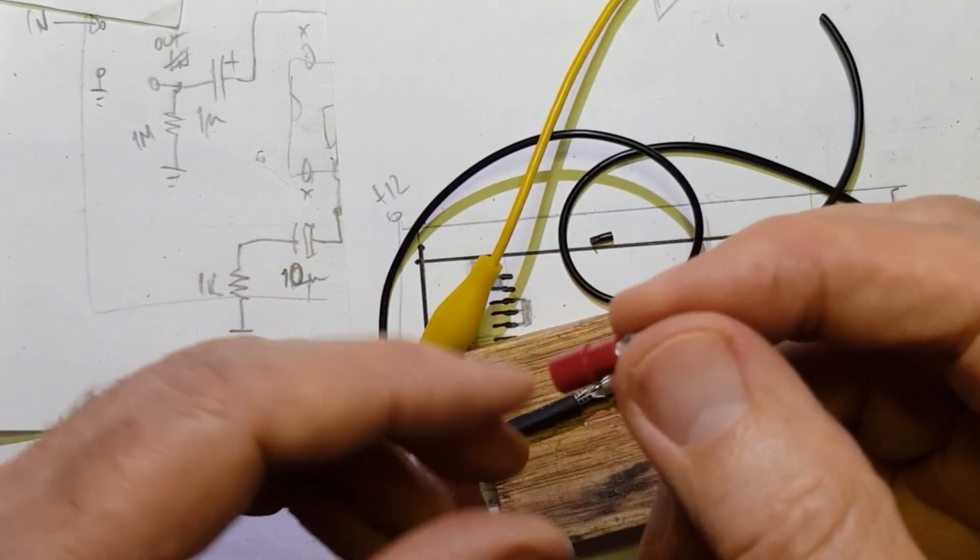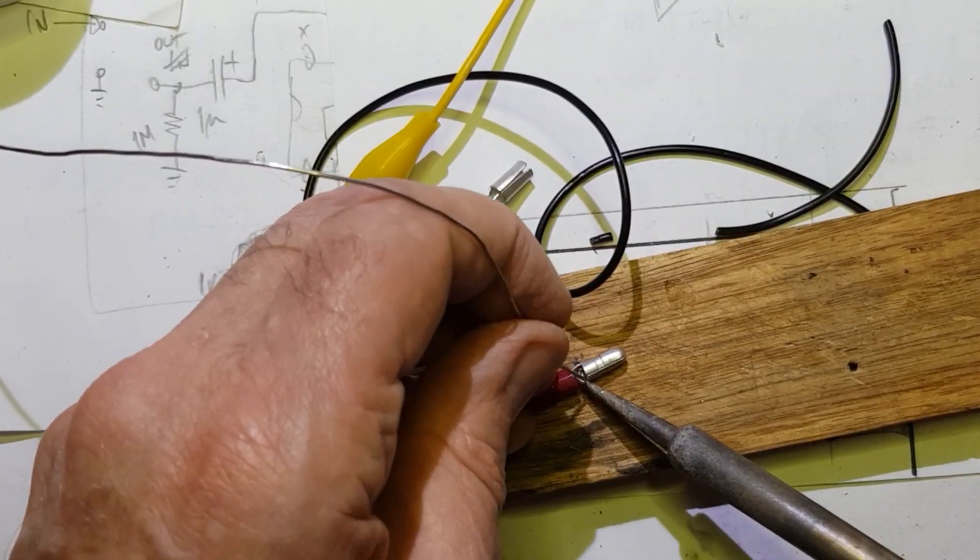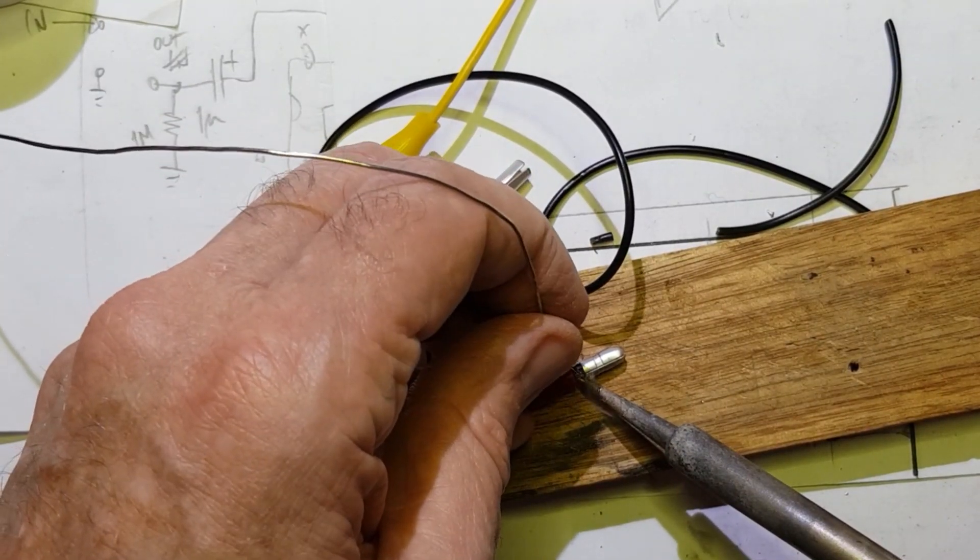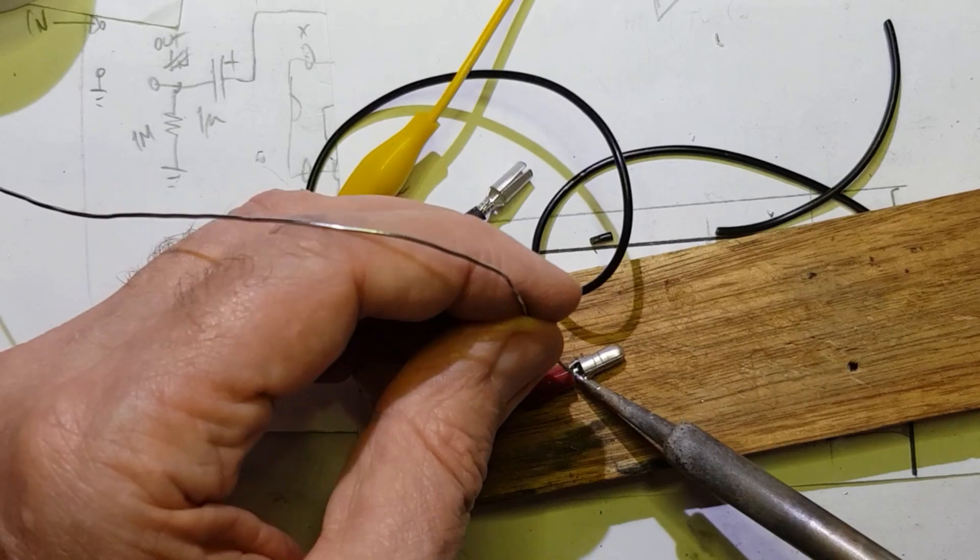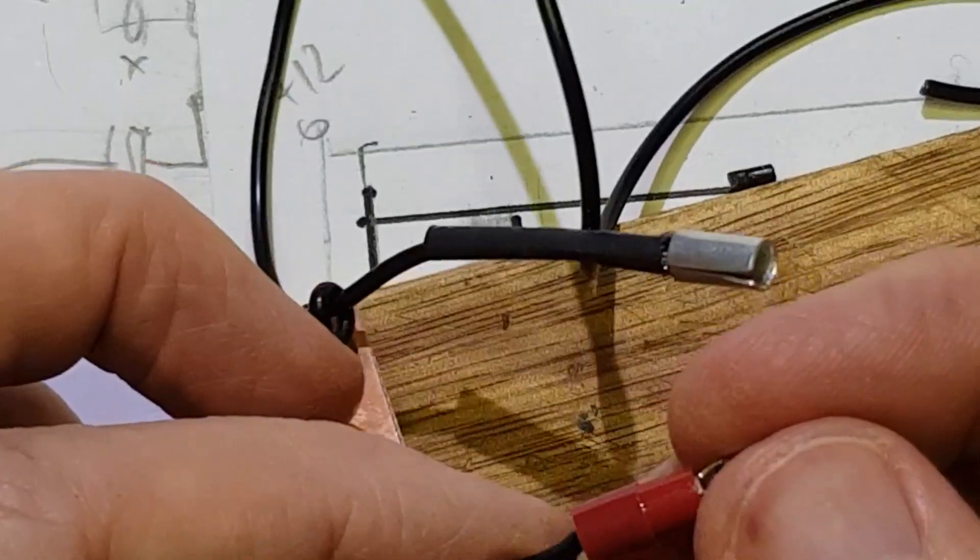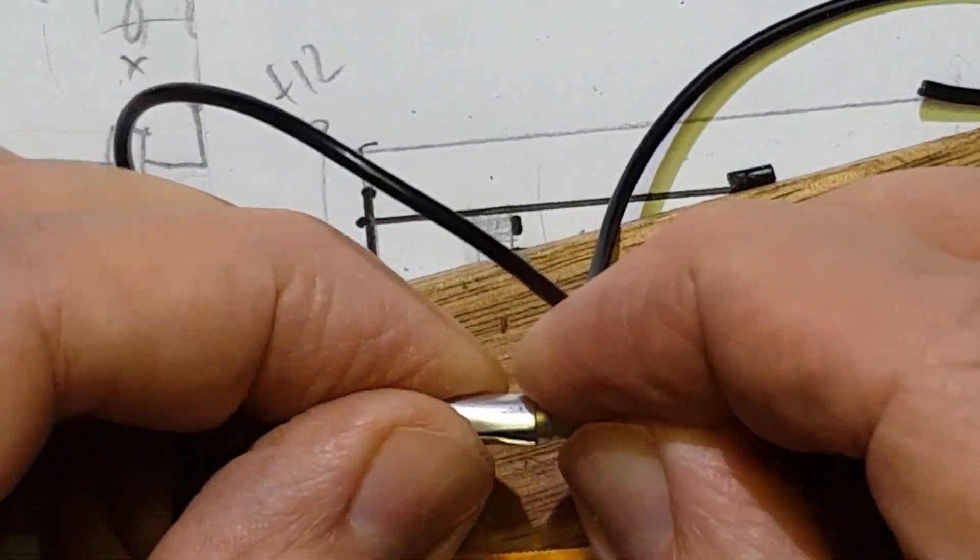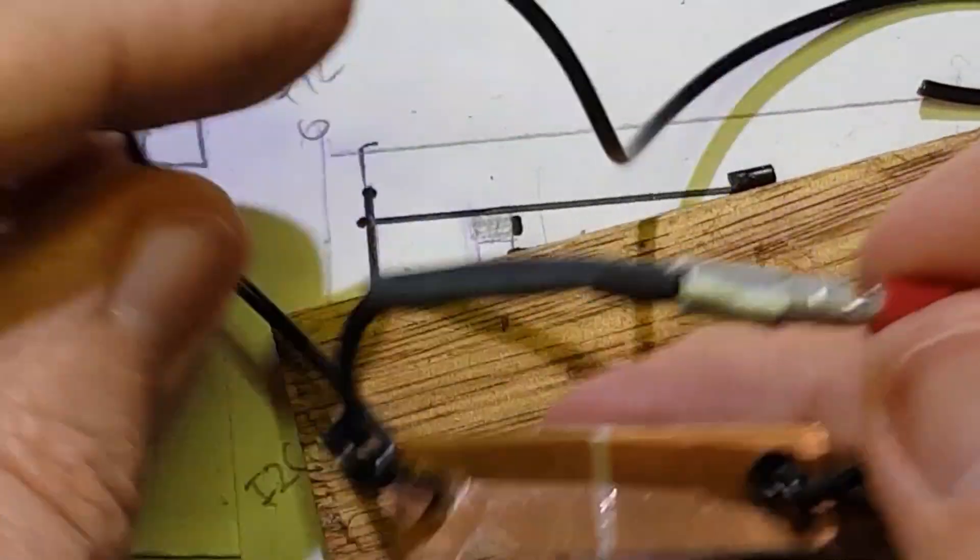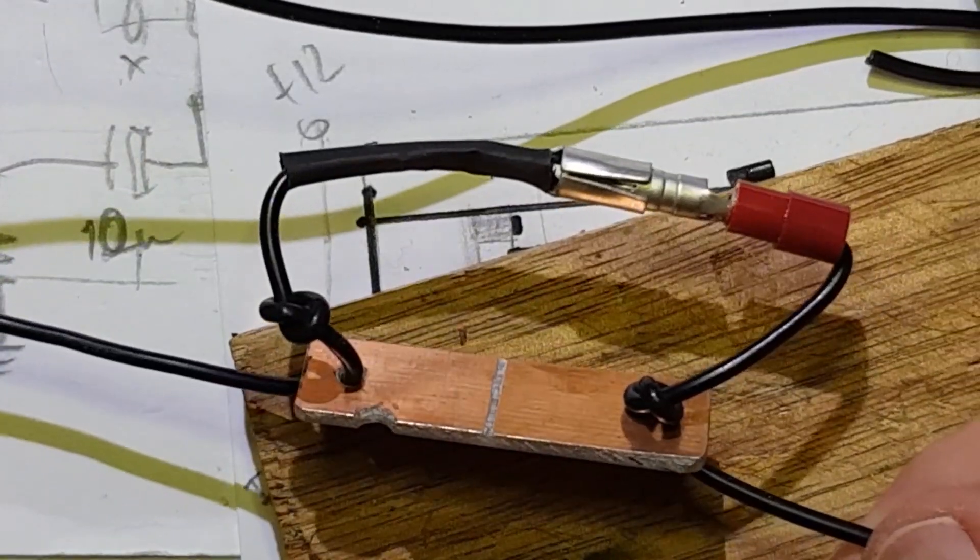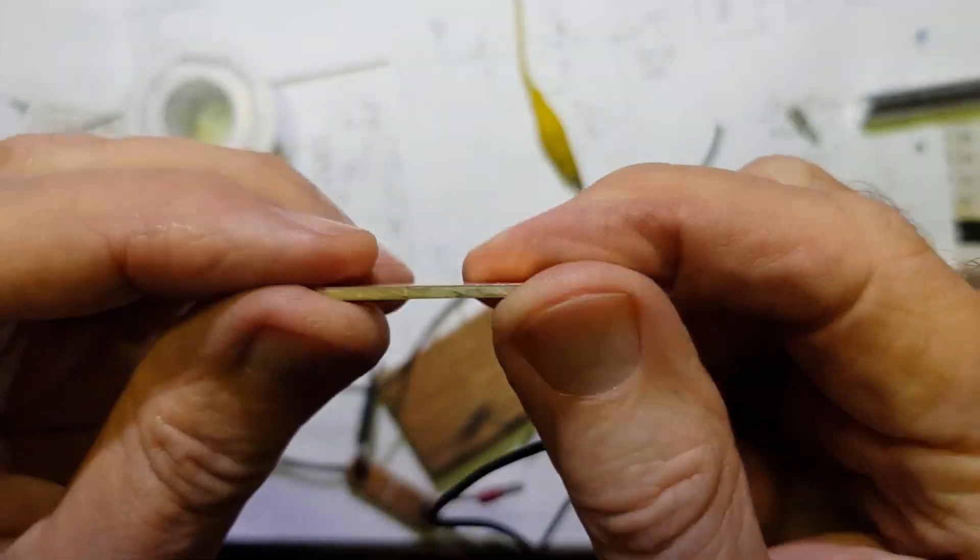Now to make up the links. So for the links, I'm using these bullet connectors. A small scrap of printed circuit board makes the insulator as part of the link assembly.